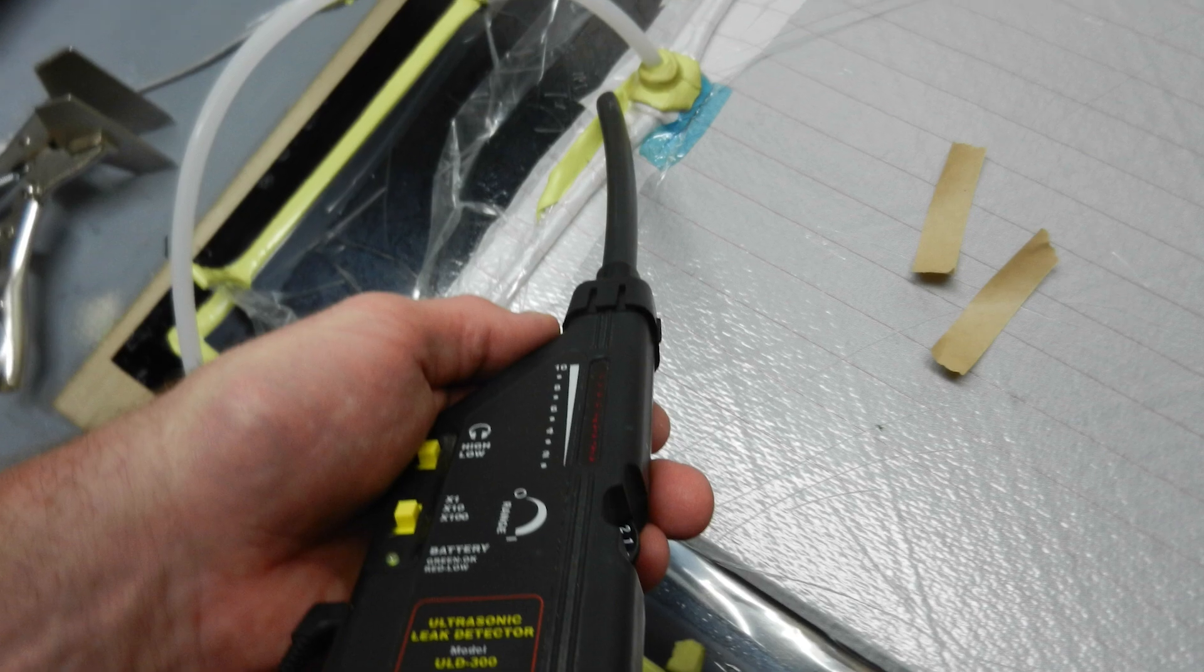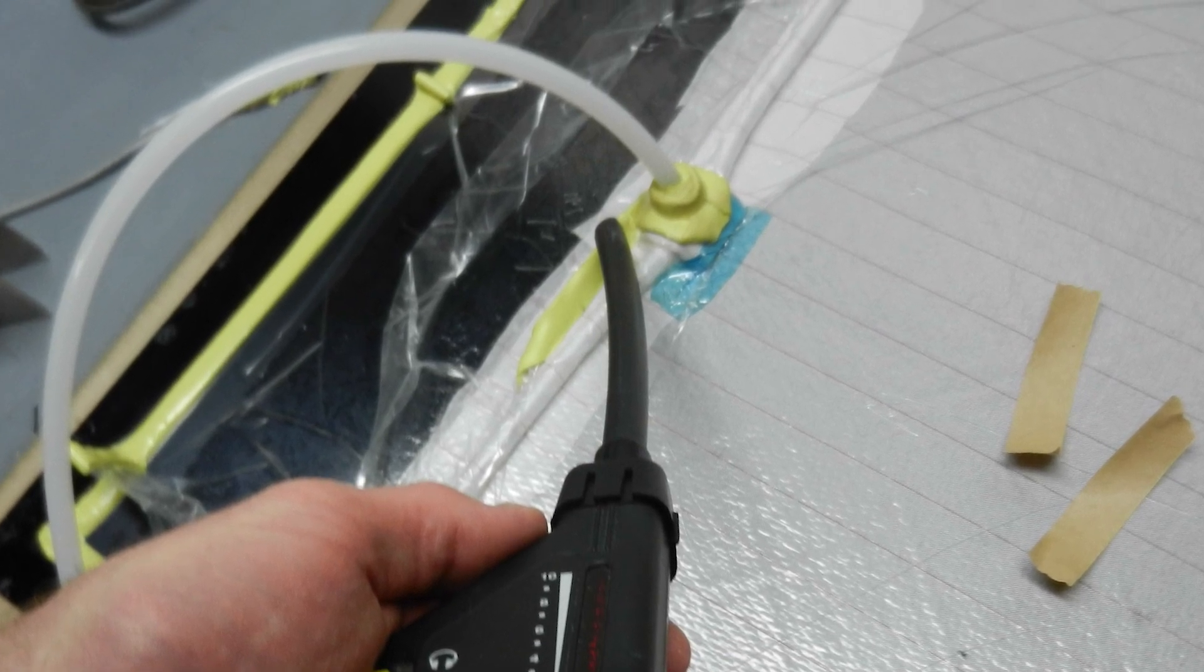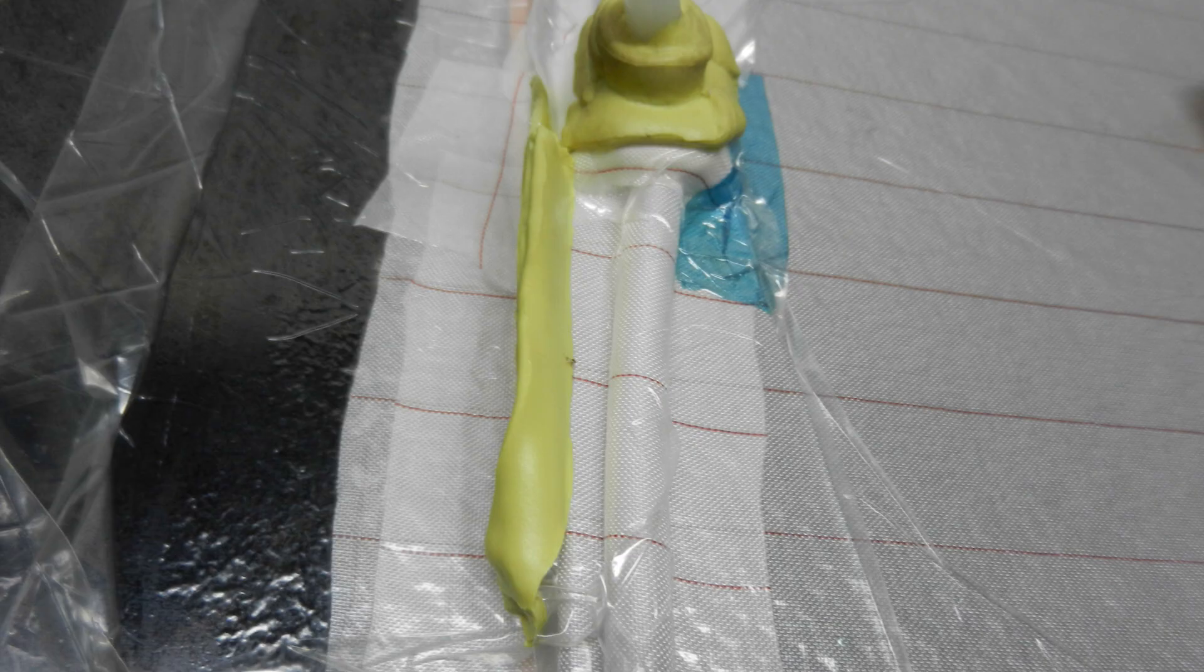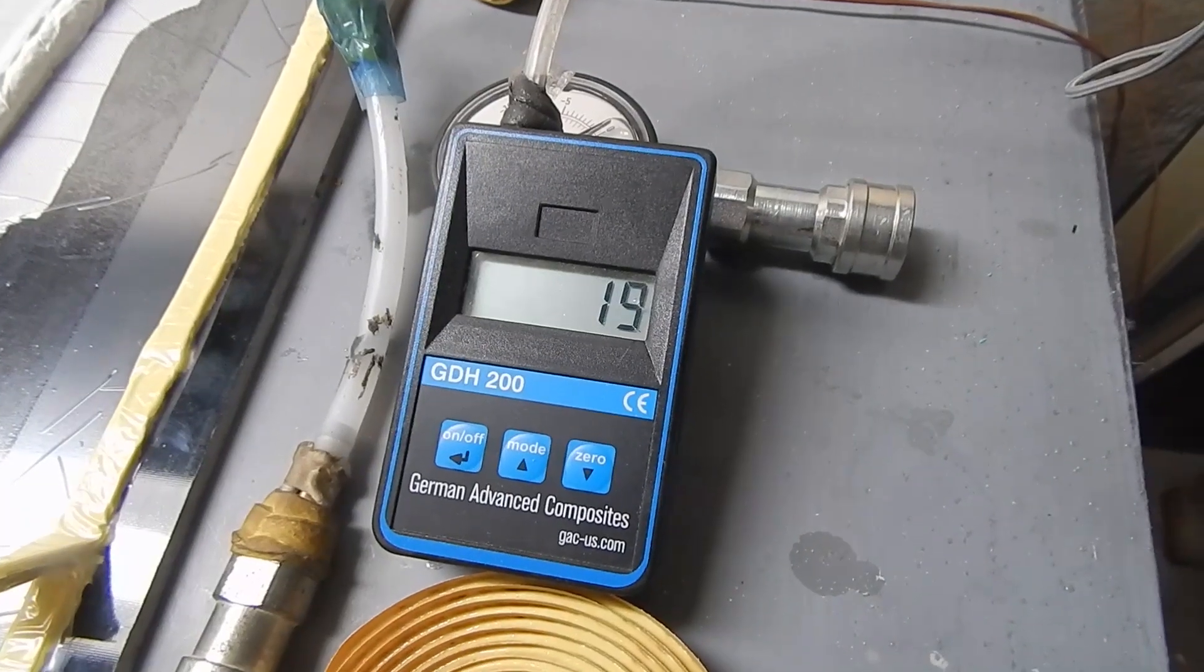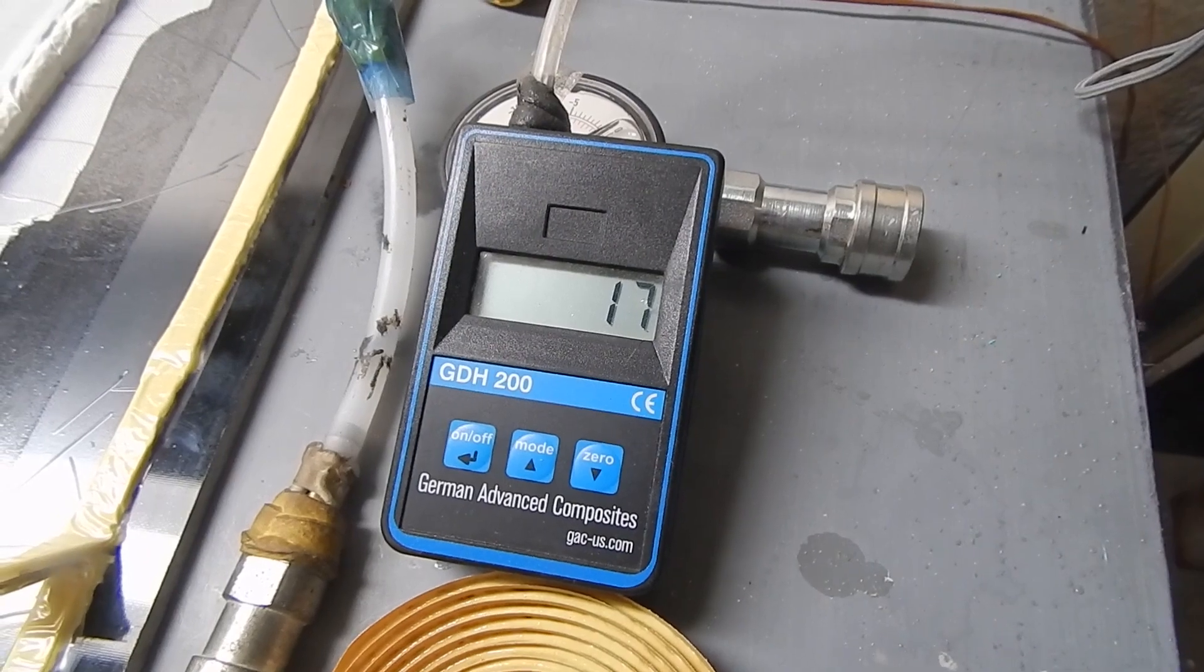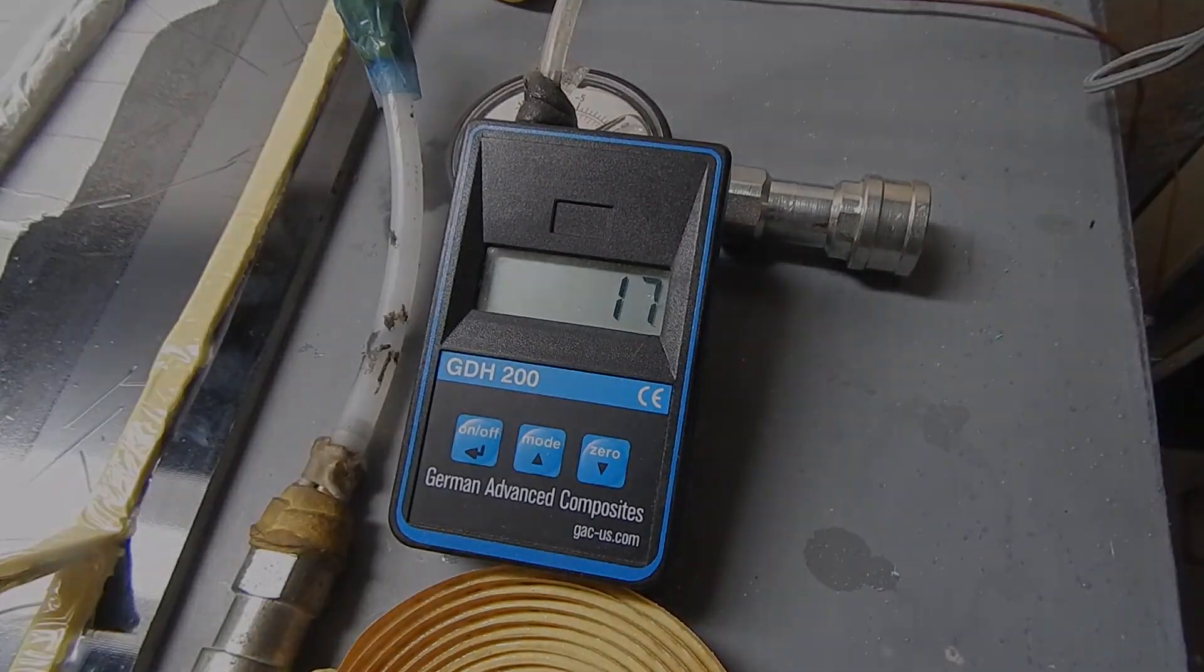And I had a little bit of a leak, so I chased it down and found there was a little hole in the bag somewhere along this pleat, sealed it with sealant tape, and everything came down to a pretty nice bag that didn't drop like crazy when I unplugged the vacuum.